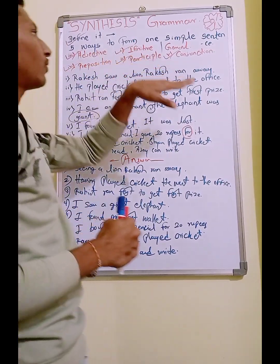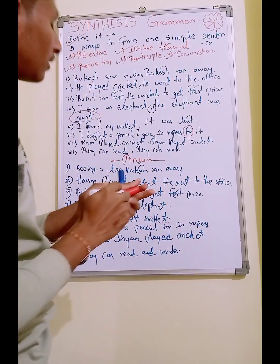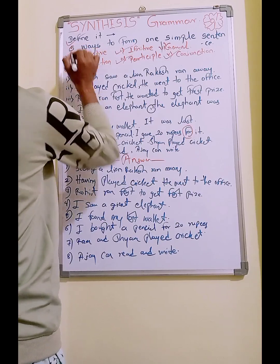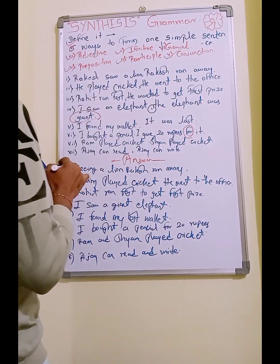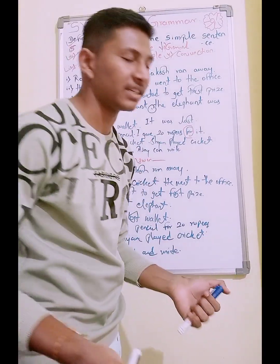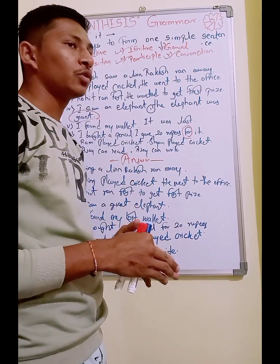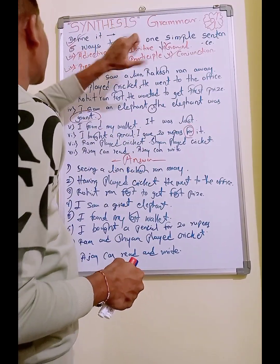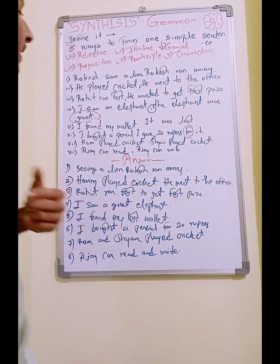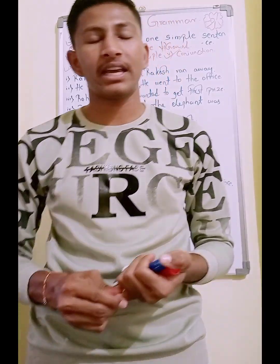So these are the six ways through which you can convert synthesis — the combination of two sentences into simple, compound, or complex. This is the formation, the actual way to convert sentences into synthesis. This is the synthesis grammar topic. I hope you understood. Thank you so much — till then, take care, bye bye. I will be bringing more innovative and educational videos like these, so thanks so much.